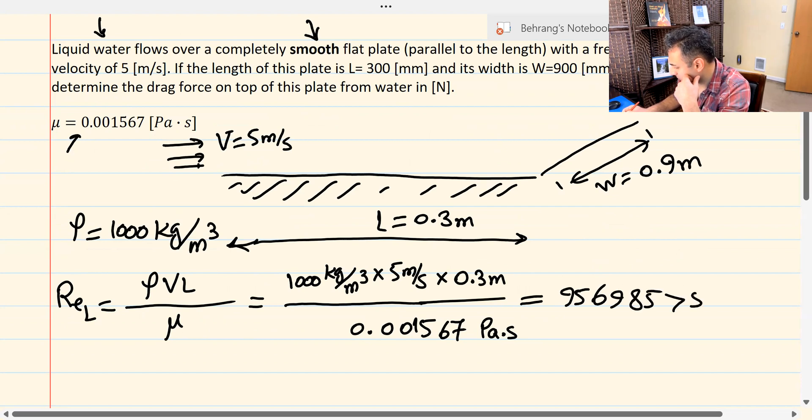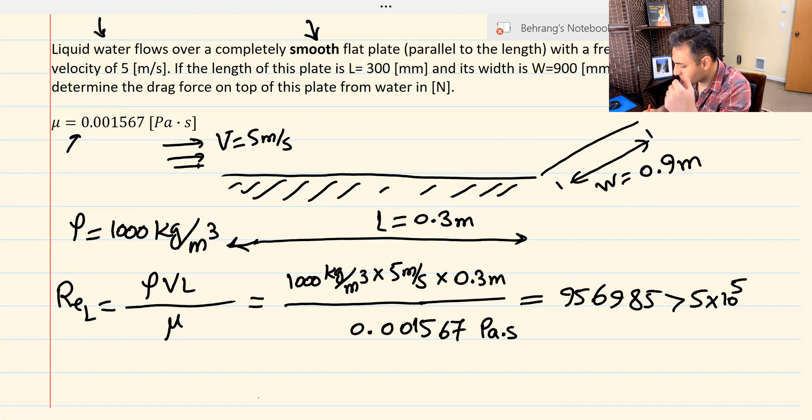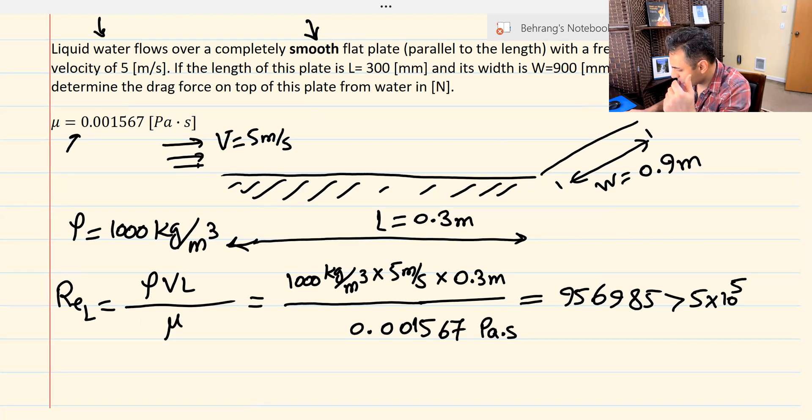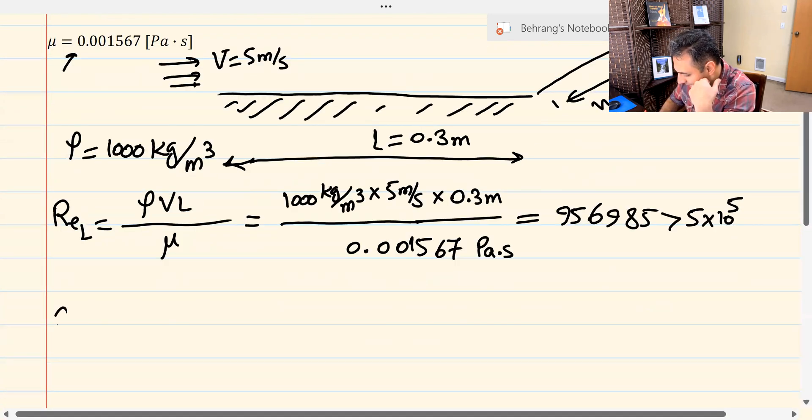This value is bigger than 5 times 10 to the fifth. So because it's a smooth flat plate and the boundary layer is not tripped, nothing has happened, everything is normal, this is going to be some sort of mixed flow. What does mixed flow mean? This is category two. Again, for categories, go back and watch that video I mentioned, and you can find the links in the description.